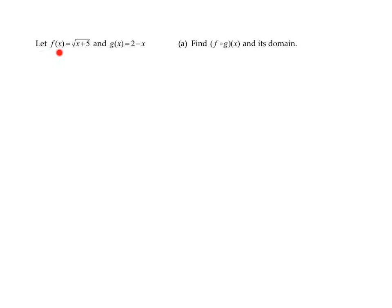In this problem, I'm told f of x is the square root of the quantity x plus 5, and g of x is 2 minus x. I need to find f composed with g of x and its domain.